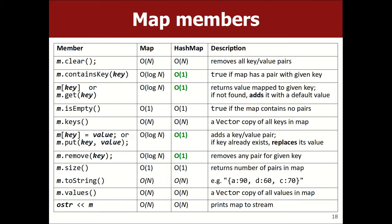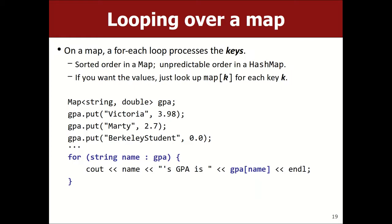The methods are put, get, contains, remove, is-empty, and size. If you want to loop over a map, you're actually looping over the keys — the left halves of the pairs. If you want the values, you look up the value for each key as you read it. So this would print in sorted order by the string keys: 'Berkeley student's GPA is 0.0', then 'Marty's GPA is 2.7', then 'Victoria's GPA is 3.98' — alphabetical order of the keys.